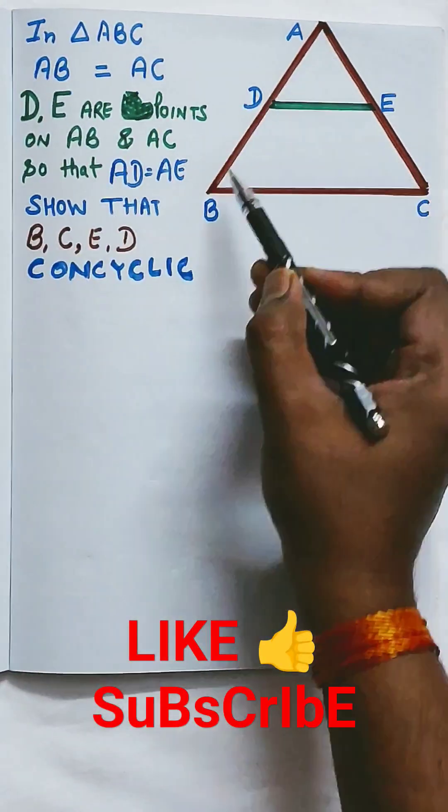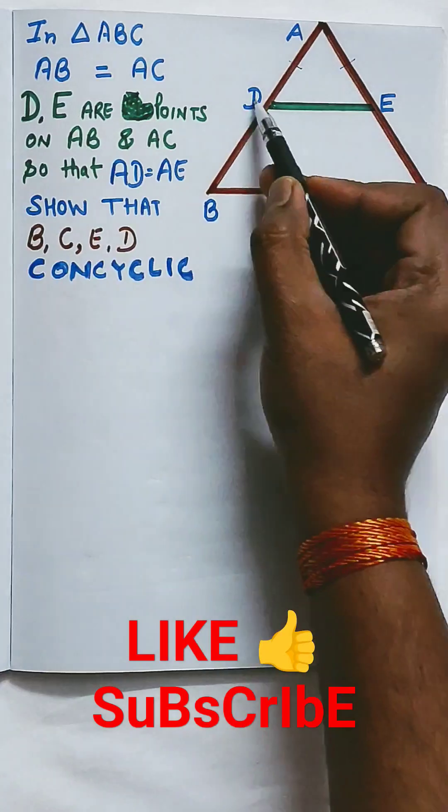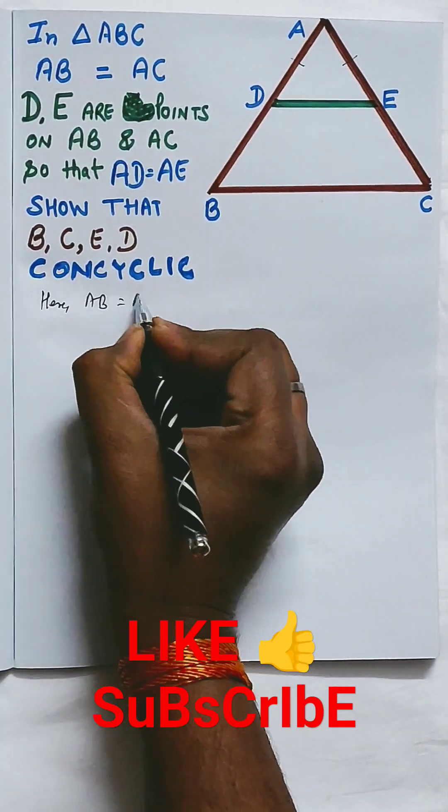In the given triangle ABC, it's given AB equal to AC, and D and E are points on AB and AC so that AD equal to AE.